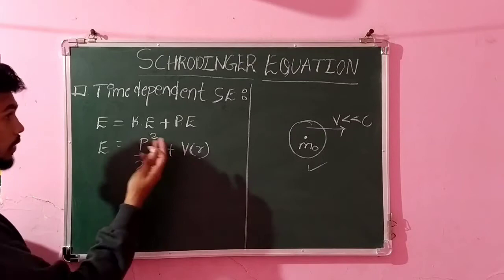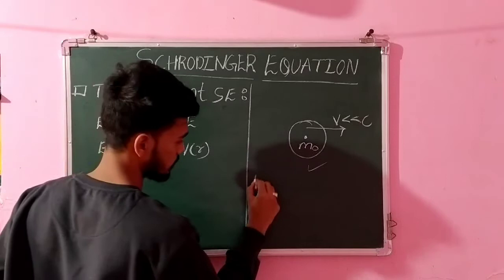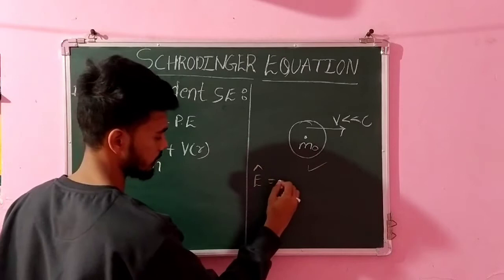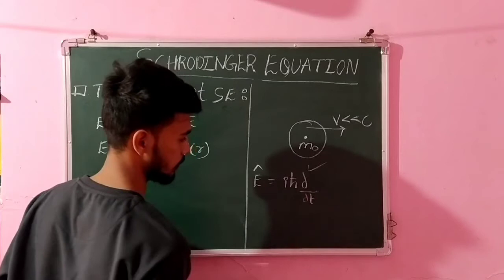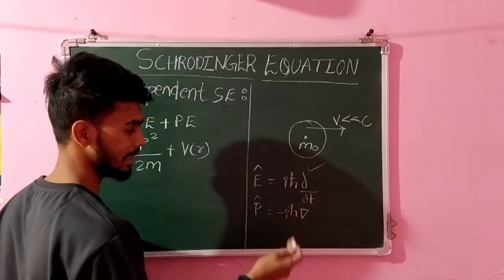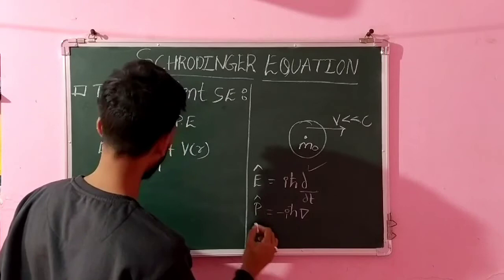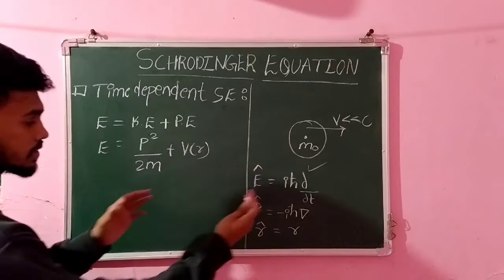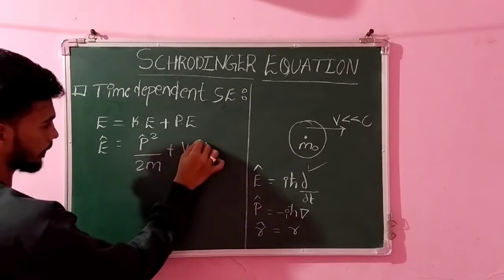So in quantum mechanics, it becomes necessary that you have to express the physical quantities in terms of the operators. So in terms of operators, it's represented as E cap. Energy operator, which is given by iℏ∂/∂T. And momentum operator, P cap, which is given by -iℏ∇. So which is in three dimensions, that is i cap ∂/∂x, j cap ∂/∂y, k cap ∂/∂z. And position operator, which is R.